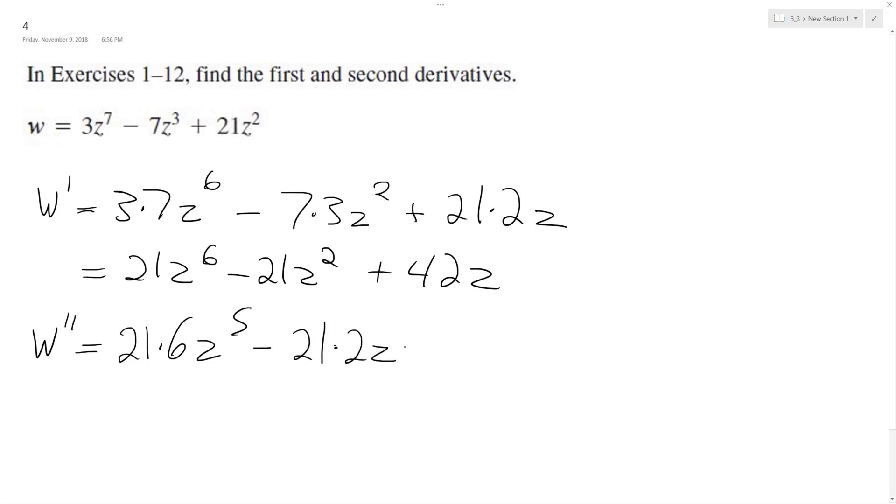And ultimately what I end up with is 21 times 6 is 126, z raised to the 5th, and then minus 42z and then plus 42.